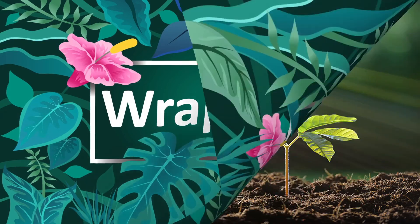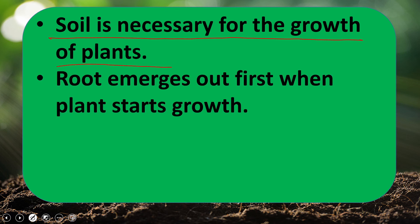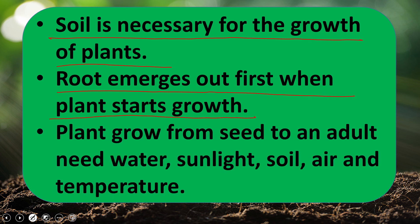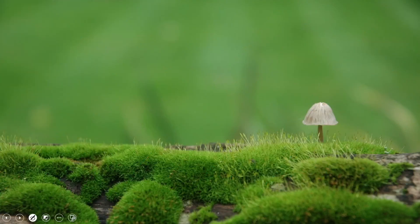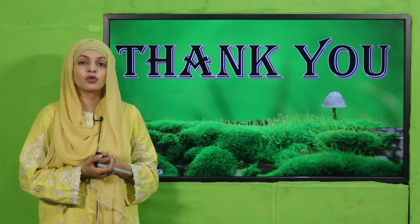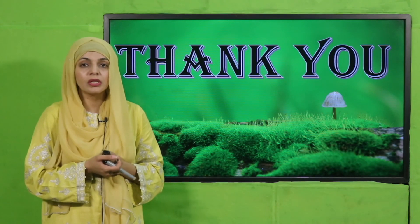Now it is time for wrap up. Today we have learned that soil is necessary for the growth of plants. Roots emerge first when a plant starts growing, and the part you see is the stem. Plants grow from seed to adult and need water, sunlight, soil, air and temperature to grow well. I hope you have enjoyed today's activity. Do perform it so that you will learn a lot from it. Keep everybody around you safe. Have a good day. Thank you so much.